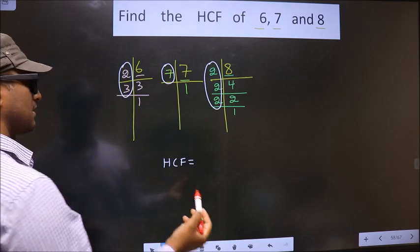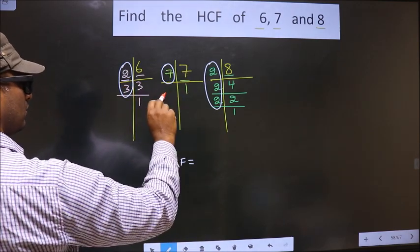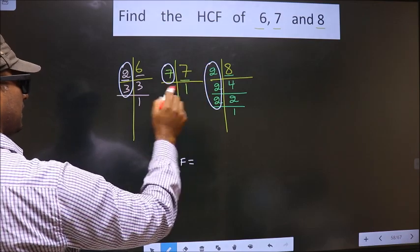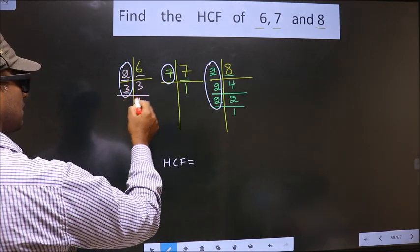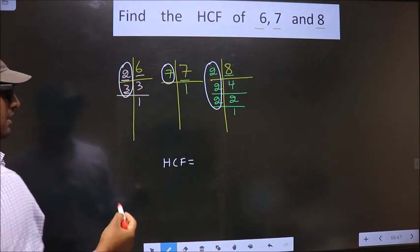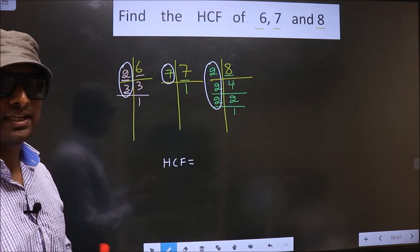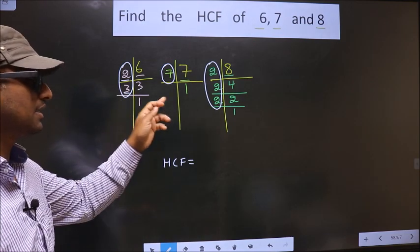So let us find, starting with the number 2. Do we have 2 here? No. So no need to check in the other place. Next number is 3. Do we have 3 here? No. No more numbers are left. So here we don't have any number present in all the 3 places.